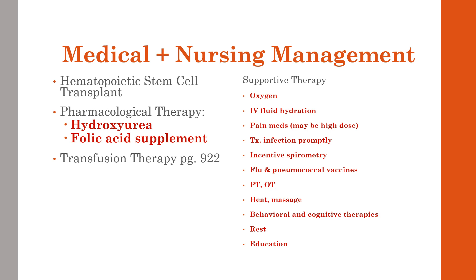Red blood cell transfusions can be highly effective in acute exacerbations of anemia, severe complications from anesthesia or surgery, improving response to infection, acute chest syndrome, multiple organ dysfunction, and sometimes in pregnancy. Overall, transfusions can decrease sickle cell complications by increasing the volume of normal cells relative to sickled cells. However, transfusions carry their own risks, and we are in a worldwide blood crisis so they're not always readily available.